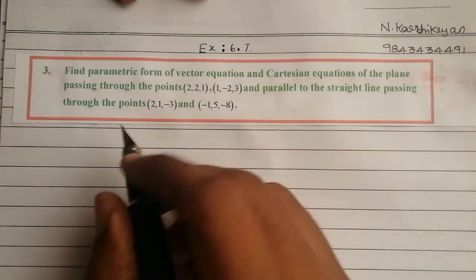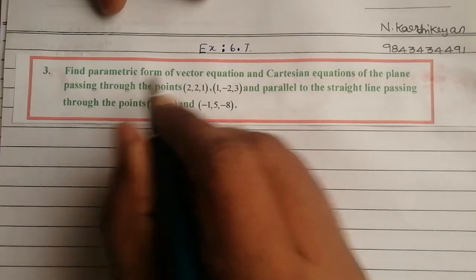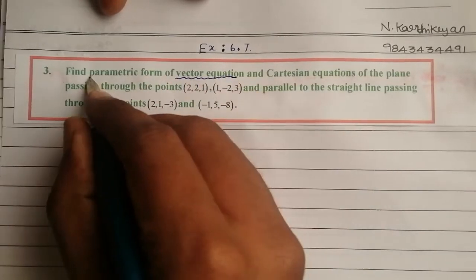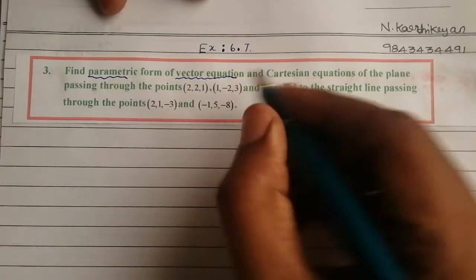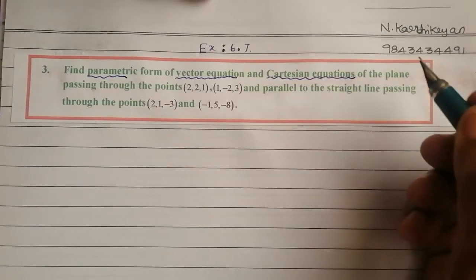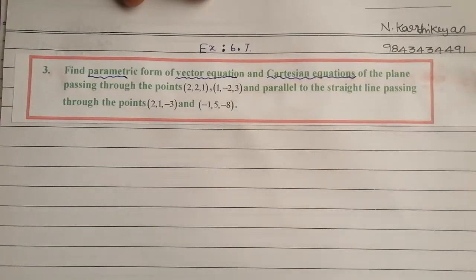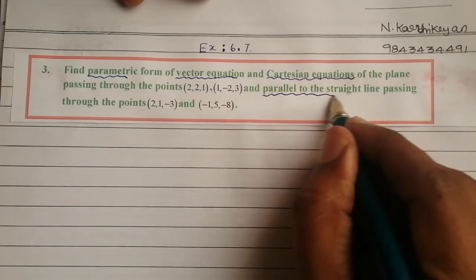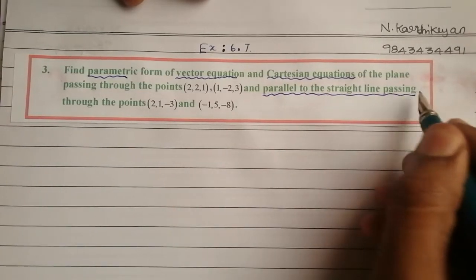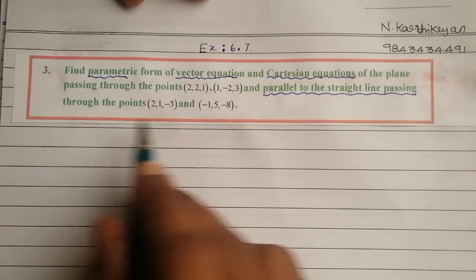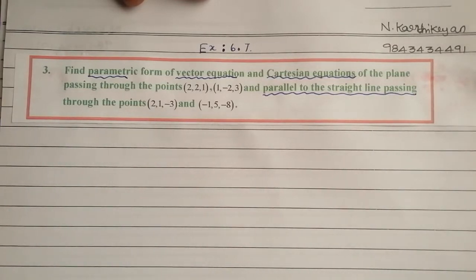In the question, find the parametric form of vector equation and Cartesian equation of the plane passing through the points, and parallel to the line passing through the points.